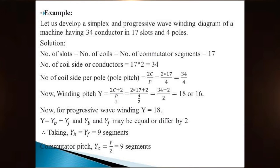YB plus YF equals 2M, and for simplex winding M equals 1; for duplex M equals 2; for triplex M equals 3. Commutator pitch YC is the distance measured in terms of commutator segments between the segments to which the two ends of a coil are connected. Commutator pitch YC = winding pitch Y divided by 2, which gives 9 commutator segments. This is a very important formula.